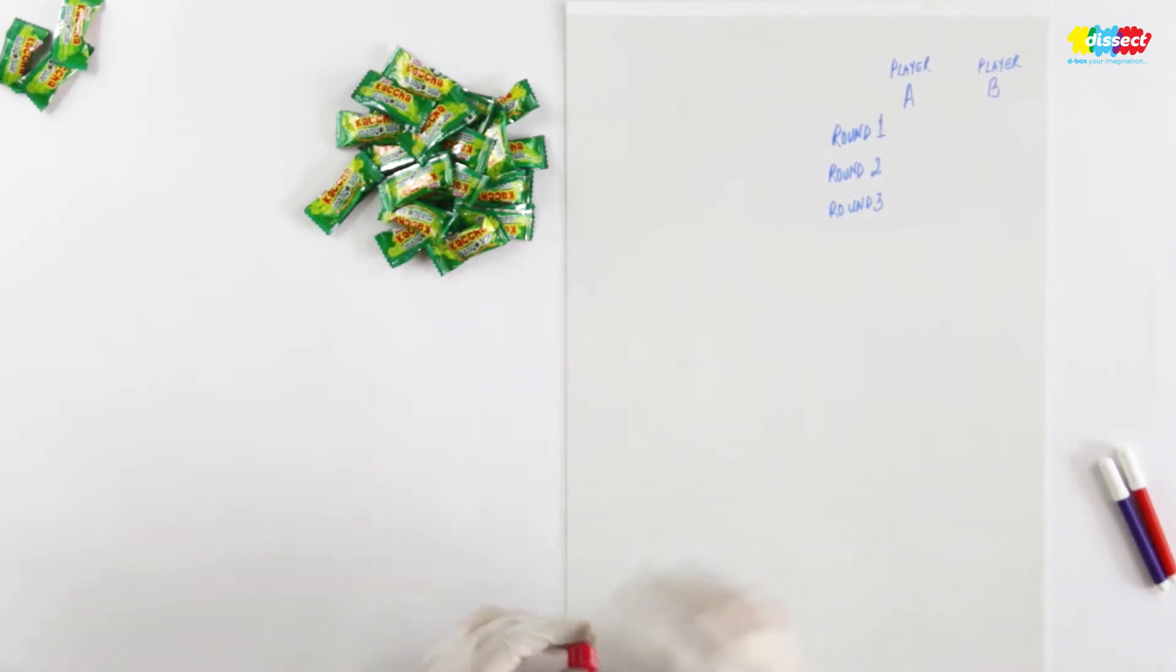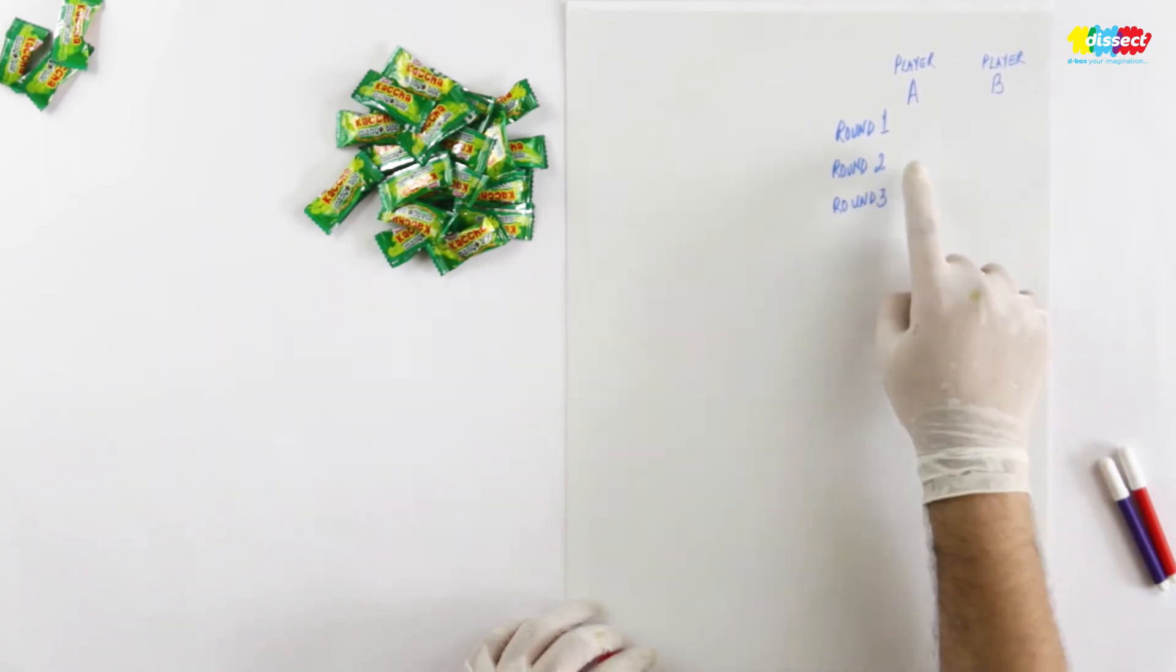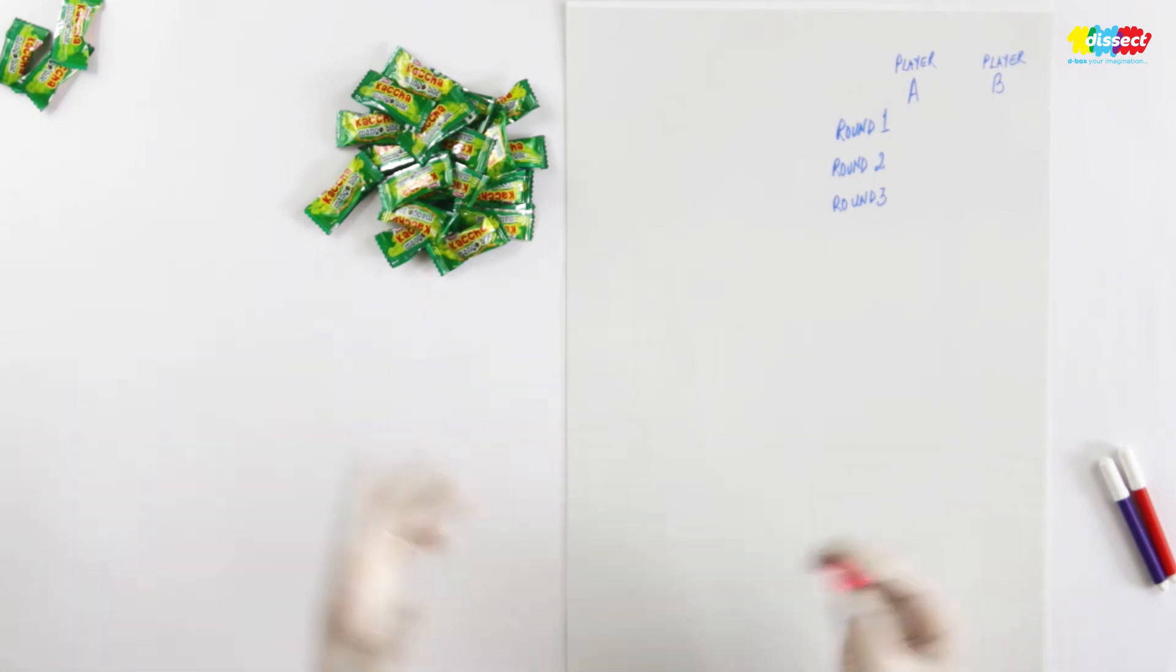Let's start this game and I'll be playing on behalf of player A and player B. We'll have 3 rounds and at the end of 3 rounds we will check who is the winner.